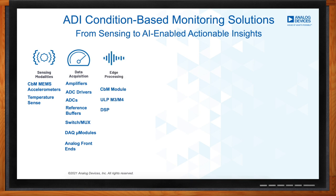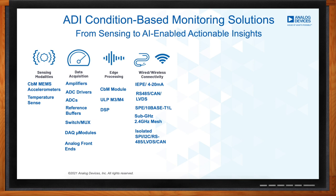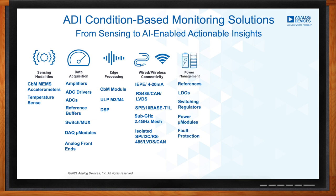Once we have asset health information in the digital domain, we deploy edge processing to create asset health data that we then need to communicate across the plant. There is a wide range of wired and wireless connectivity options. On the wired side, we have IEP, 4 to 20 milliamp, RS-485, CAN, LVDS, and new single-pair Ethernet technologies like 10Base-T1L that can provide both power and data on a single twisted-pair cable. We also have isolated transceivers. On the wireless side, we have sub-gigahertz and 2.4 GHz smart mesh technology. Analog Devices also has a broad power management portfolio covering power regulation, protection, and references to power all these components.